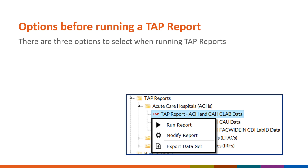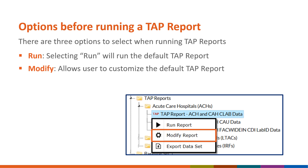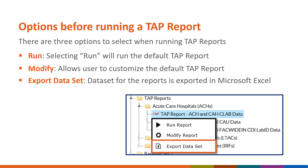There are three options when running TAP Reports. The first option is Run, which runs the default TAP Report. The second option is Modify, which allows the user to customize the default TAP Report. The third option is Export Data Set, which exports the data set for the report.